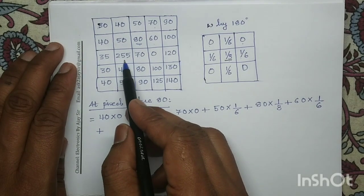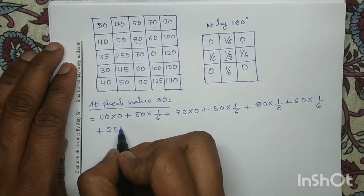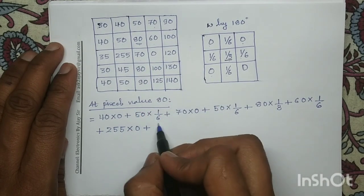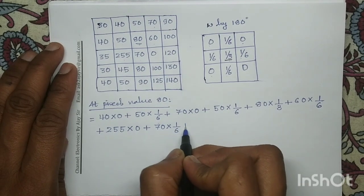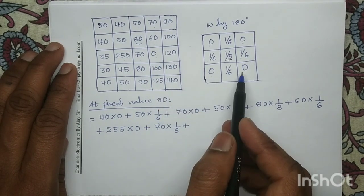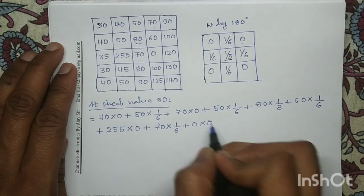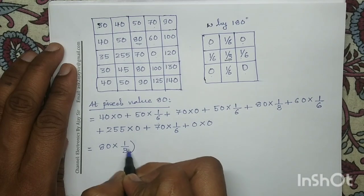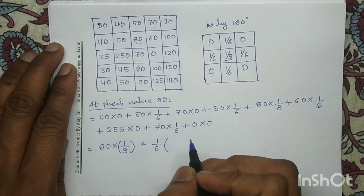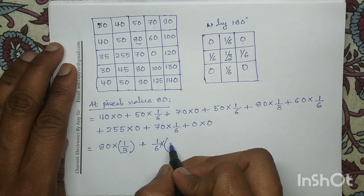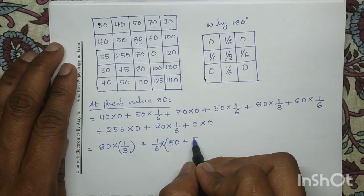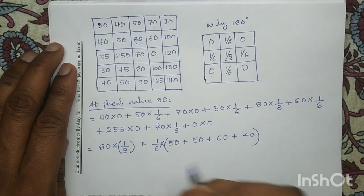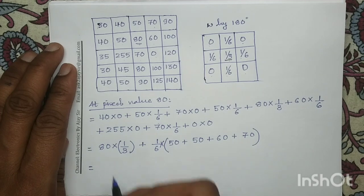In the next row, pixel value 255 will be multiplied with coefficient 0, pixel value 70 will be multiplied with coefficient 1/6, and pixel value 0 will be multiplied with coefficient 0. Simplifying: 80 multiplied with 1/3, plus 1/6 multiplied with 50 plus 50 plus 60 plus 70, which on simplification gives the value 65.